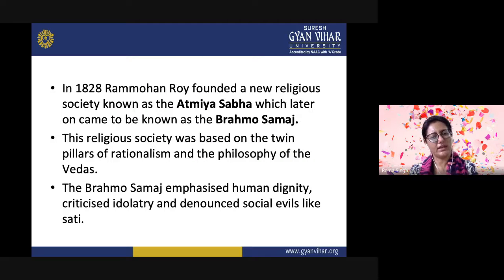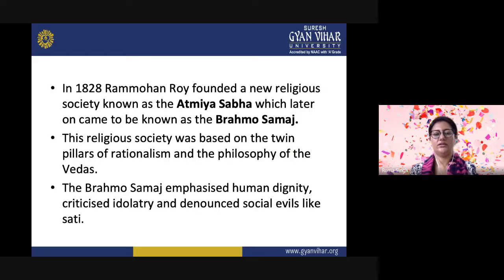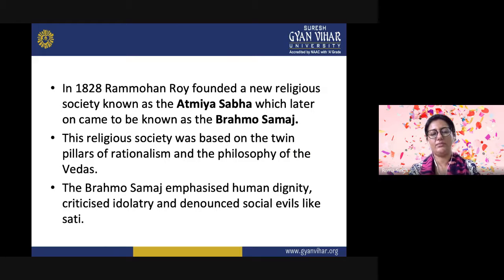In 1828, Ram Mohan Roy founded a new religious society known as the Atmiya Sabha, which was later renamed as the Brahma Samaj. The religious society was based on the twin pillars of rationalism and the philosophy of the Vedas. Through this organization, he tried to bring changes in society and its age-old traditions. The Brahma Samaj emphasized human dignity, criticized idolatry, and denounced social evils like Sati Pratha. There were separate rules for joining the Brahma Samaj.